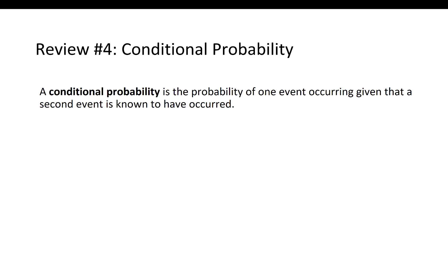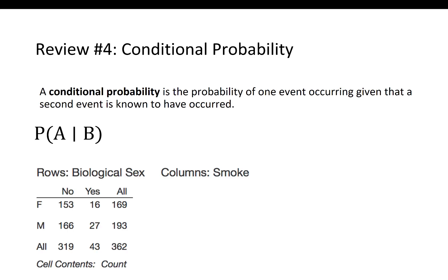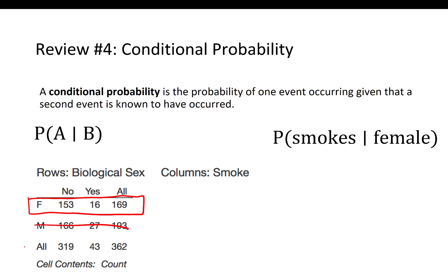The fourth point I want to review is conditional probability — the probability of one event occurring given that a second event is known to have occurred. This is written using notation where the vertical line is read as 'given,' so P(A|B) is read as 'the probability of A given B.' Using the two-way contingency table, let's find the probability that someone smokes given that they are female. Of the 169 females in the sample, 16 said they did smoke. So 16 divided by 169 gives a conditional probability of 0.095.